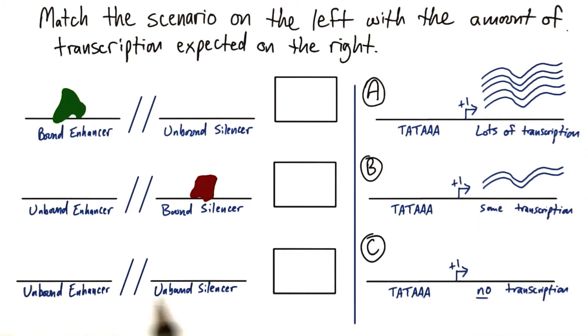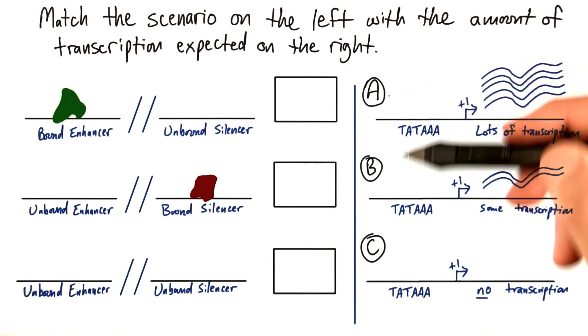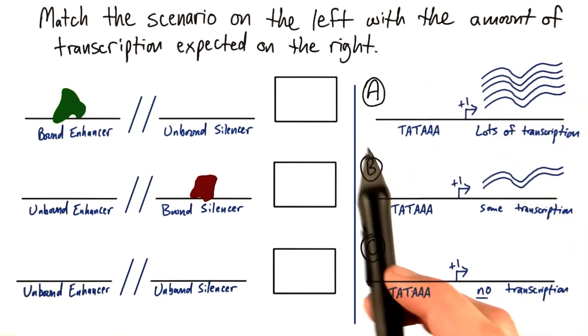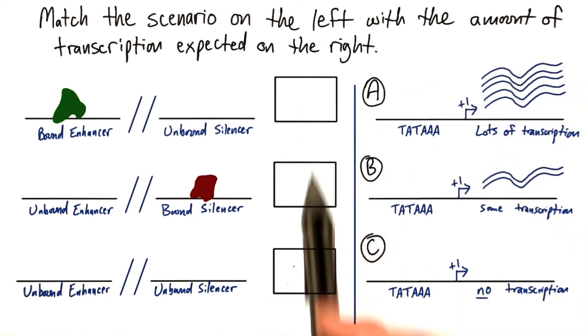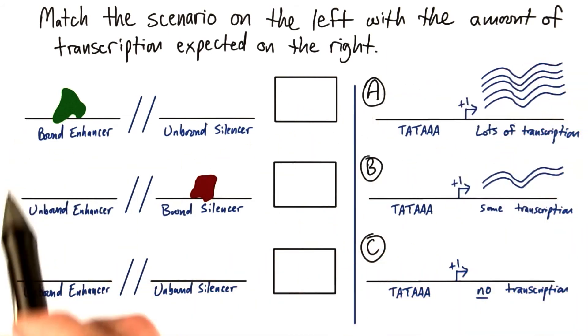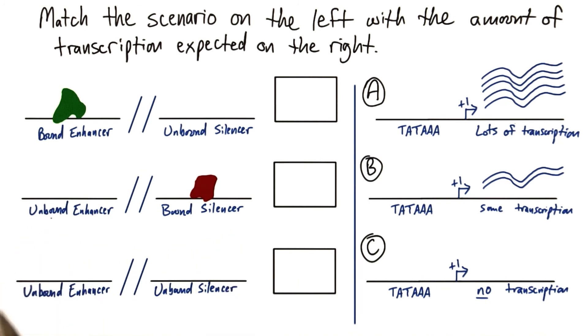There are three scenarios here on the left, three scenarios on the right. The ones on the right are lettered A, B, and C. Just put the letter in the box that corresponds to the situation on the left where you'd expect that situation to be a match.